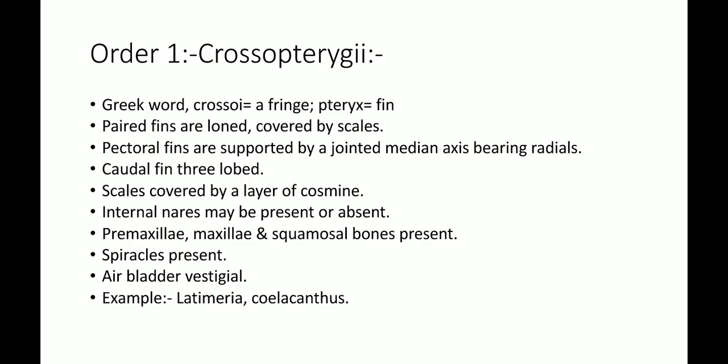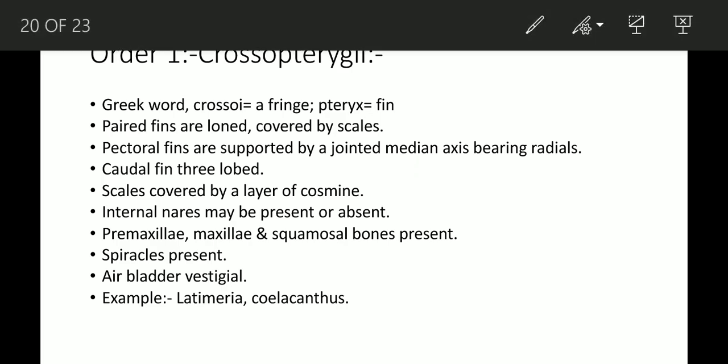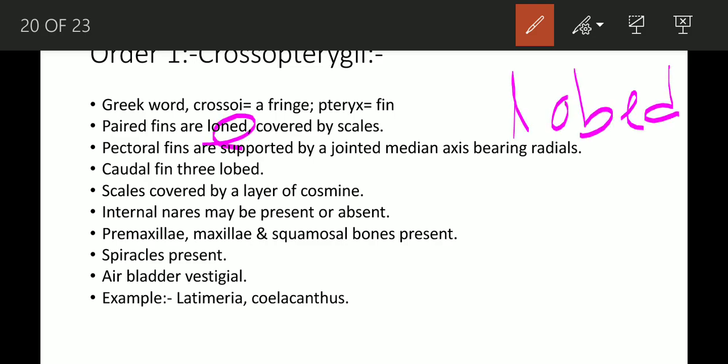Paired fins are lobed and covered by scales. Pectoral fins are supported by a jointed median axis bearing radials. The caudal fin is trilobed. Scales are covered by a layer of cosmin. The internal layer may be present or absent. Pre-maxillary and squamous bones are present. Spiracle present — either functional, reduced, or vestigial. Example: Latimeria chalcumnae.